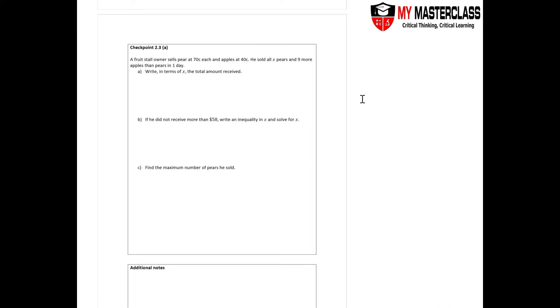Let's take a look at Checkpoint 2.3 Part A. A fruit store owner sells pears at $0.70 each and apples at $0.40 each. He sold all X pears and 9 more apples than pears in one day. So what's the total amount that he received?